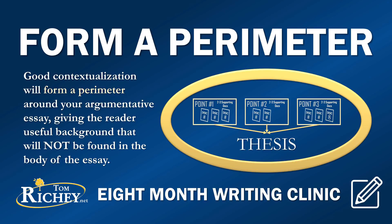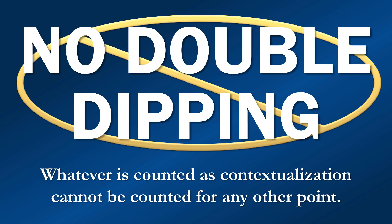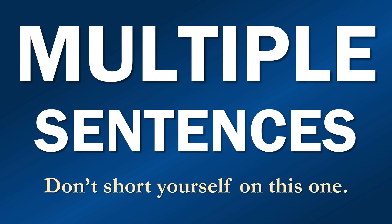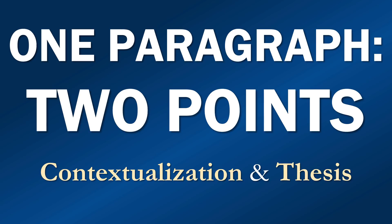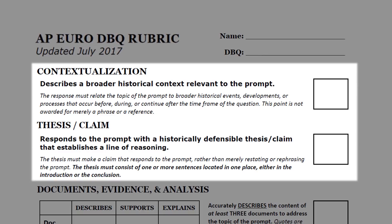Good contextualization will form a perimeter around your argumentative essay, giving the reader useful background that will not be found in the body of the essay. There must be no double dipping — whatever is counted for contextualization cannot be counted for any other point. Contextualization needs to be multiple sentences. Don't shortchange yourself on this one, and make sure these sentences actually say something of substance. Just because it's background doesn't mean it should be vague. I encourage students to put in at least one or two specific details.